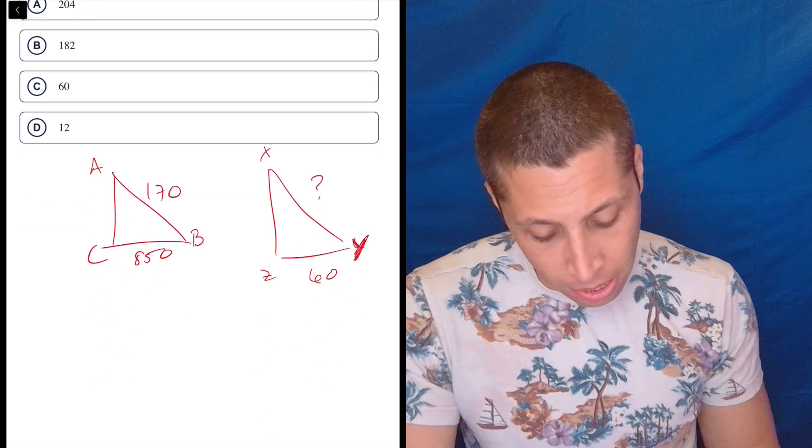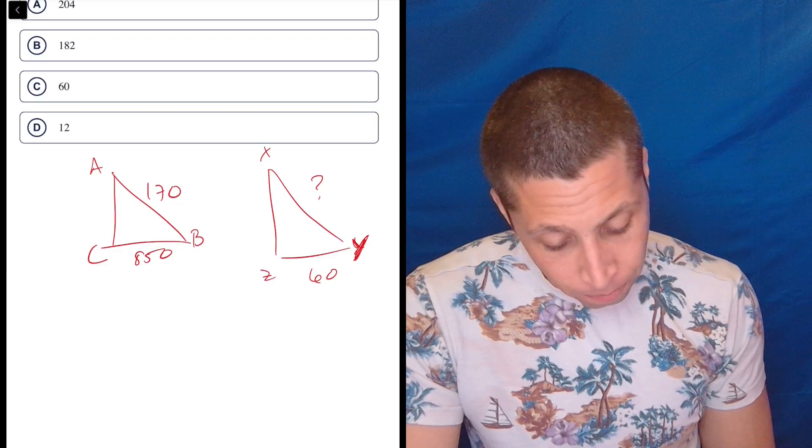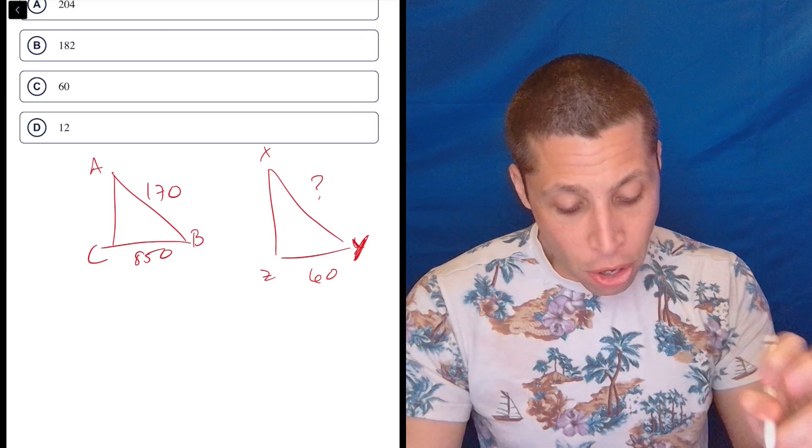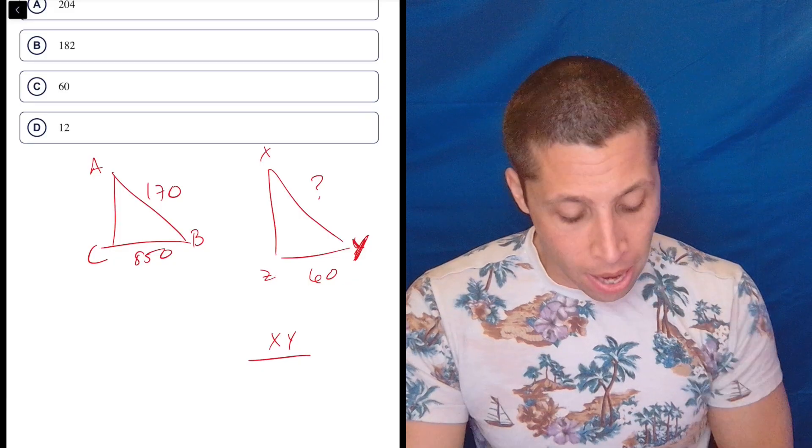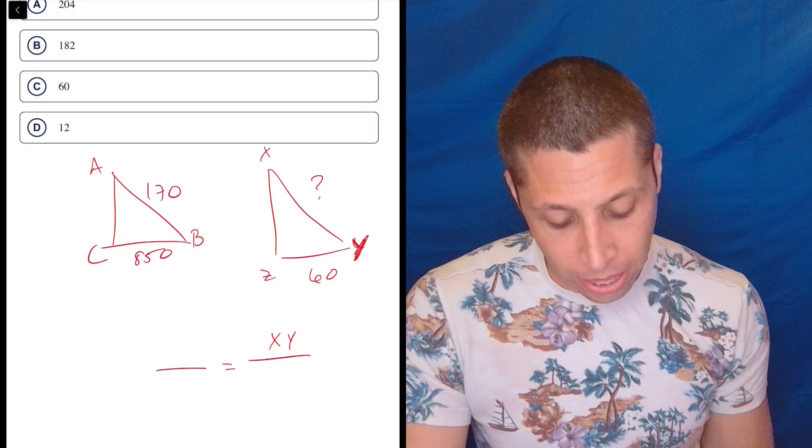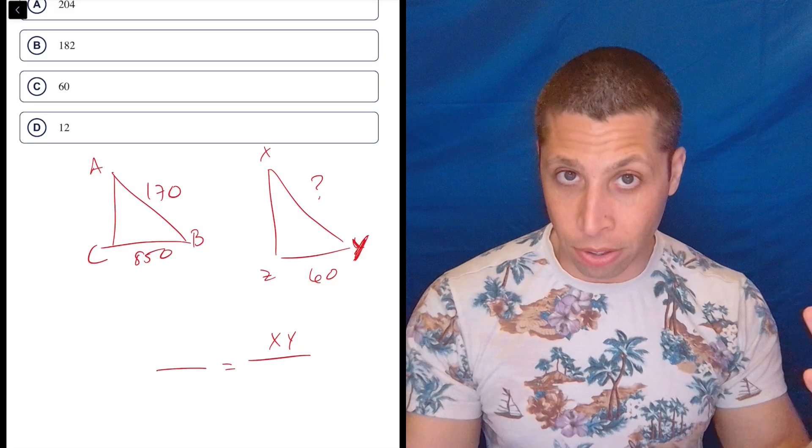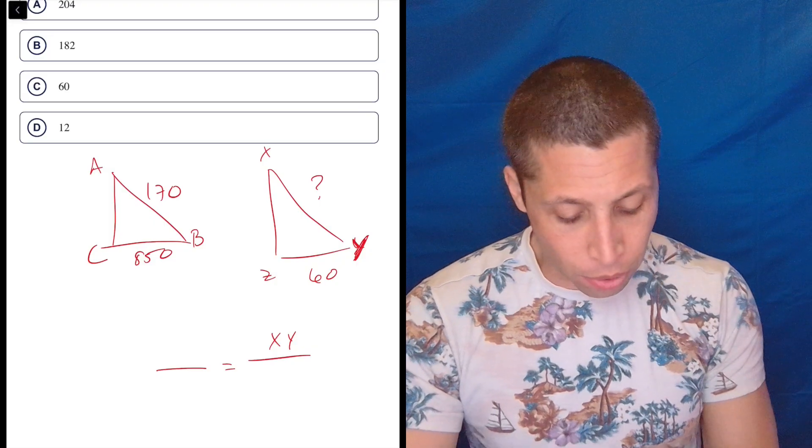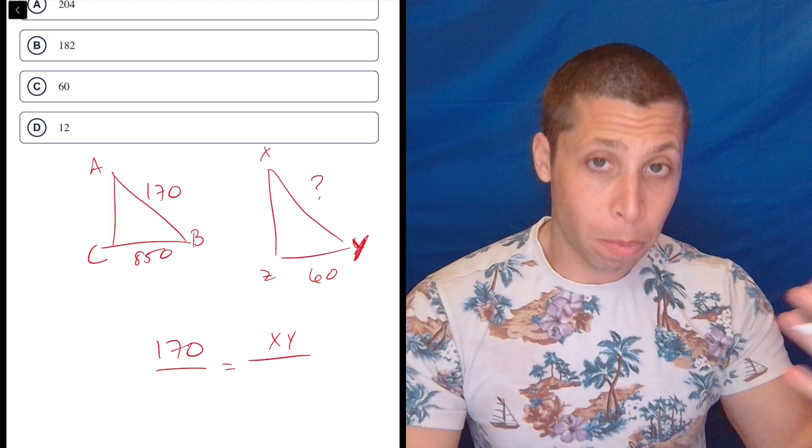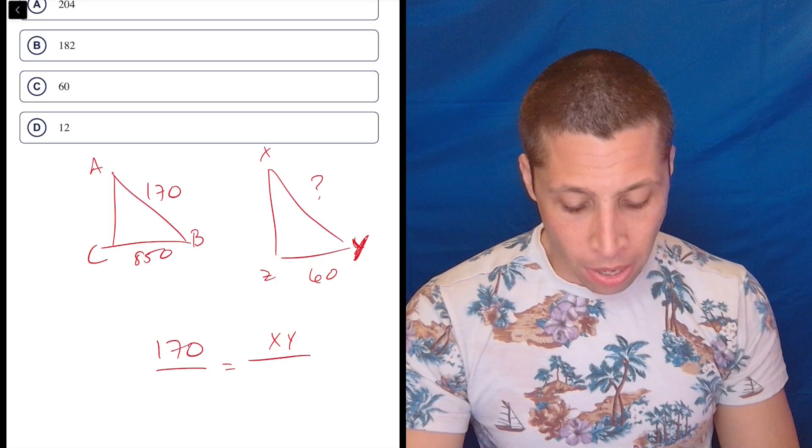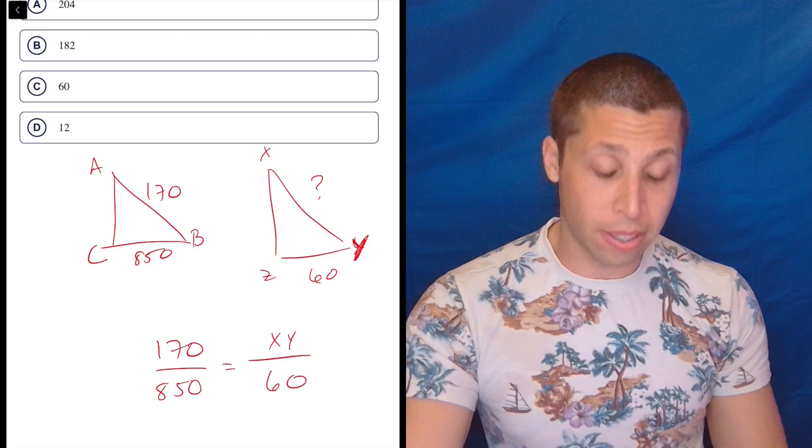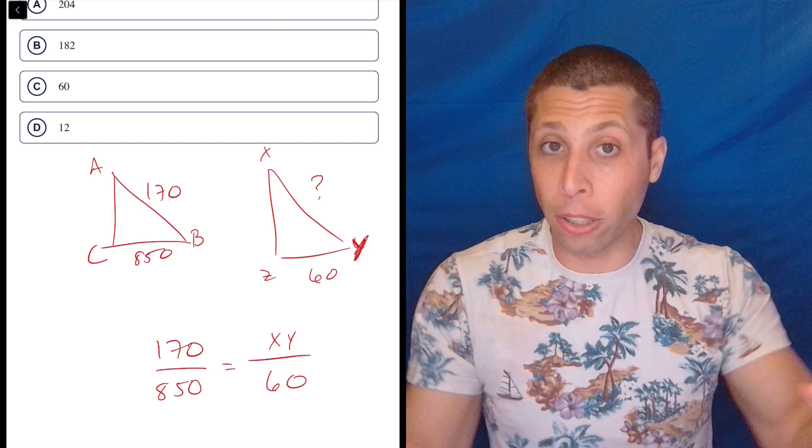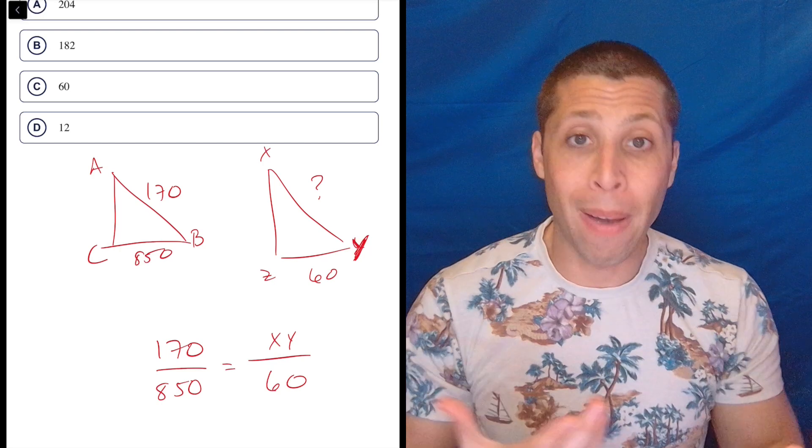So this is just a proportion. What I would do here is I'm going to start with my unknown, so XY. I like to put that unknown piece on the top, and then I think, what corresponds with that? Since I have two triangles on left and right, let's organize it that way. So the 170 corresponds with the XY side. Then the only other side I have on the left is the 850, and the only other side I have on the right is the 60, and that's good because they clearly correspond as well.